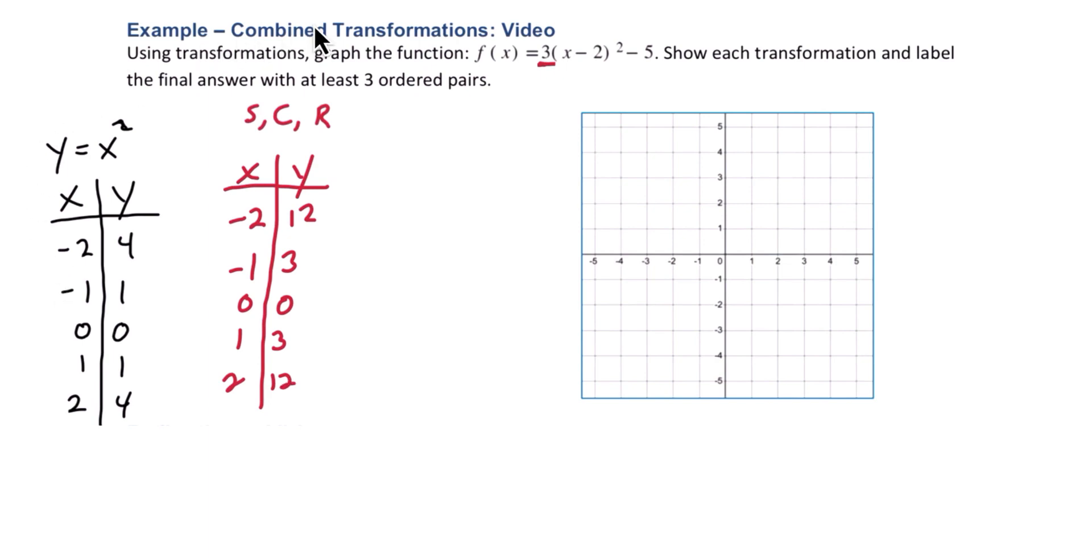And then in the final step, we want to take care of any shifts, horizontal and vertical. This minus 2 on the inside of the function is a horizontal shift. And remember, when we're looking at horizontal shifts, it's the opposite of what it looks like we're going to do. This says x minus 2, but we're actually going to do the opposite. We're going to add 2 to each of the x values. The minus 5 on the outside is affecting the graph vertically, y values, in a logical way. It looks like we're going to subtract 5, and we will.